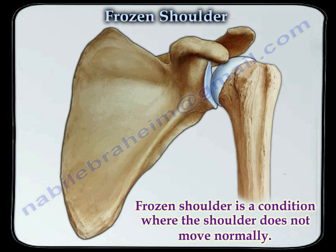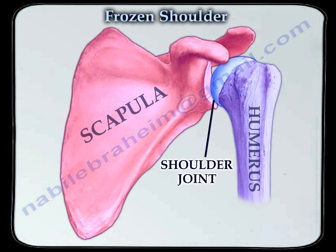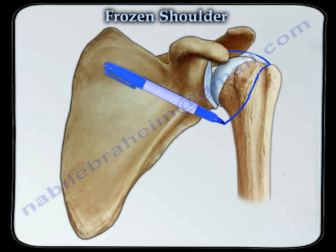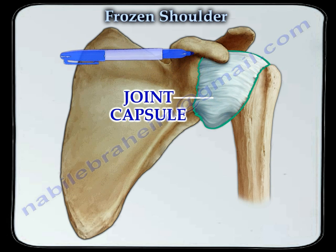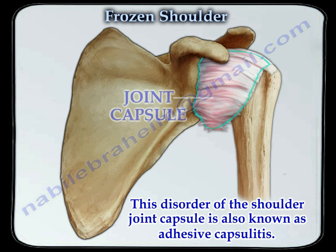Frozen shoulder is a condition where the shoulder does not move normally. The shoulder joint is a joint between the humerus and scapula, supported by ligaments and a capsule. Frozen shoulder is also called adhesive capsulitis.